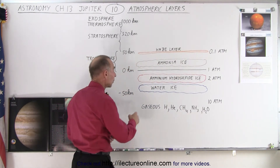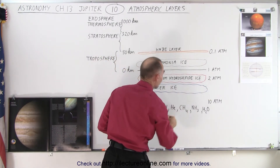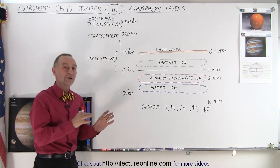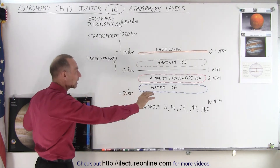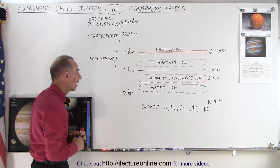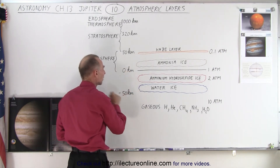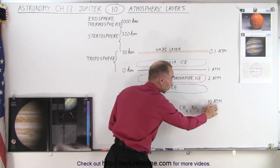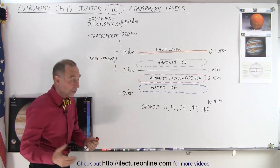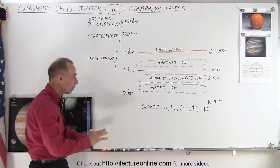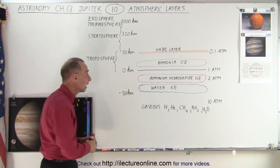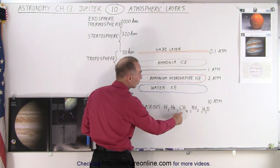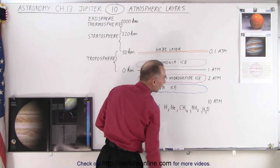Below the one-atmosphere pressure point — now considered inside the planet — we have a layer of clouds formed from ammonium hydrosulfide ice, which gives that reddish color. Going further down, at pressures of five to seven atmospheres, we have a layer of clouds that actually contain water ice. There isn't a lot of water on Jupiter, but sufficient to form that water ice cloud layer, roughly 50 kilometers inside the planet.